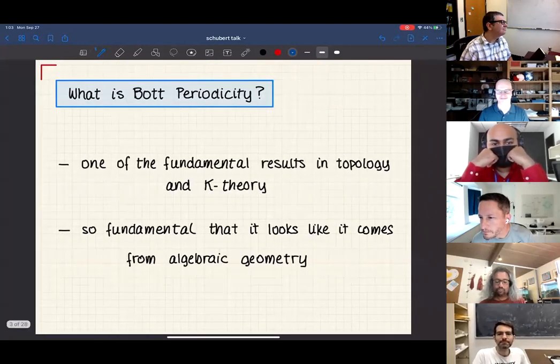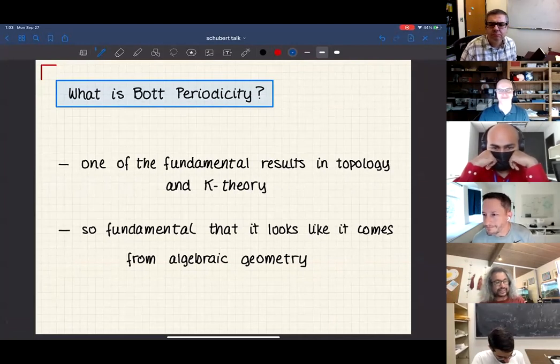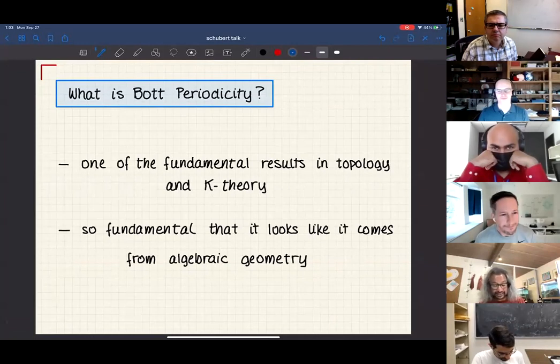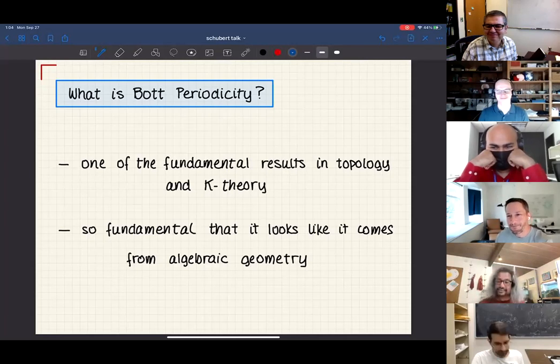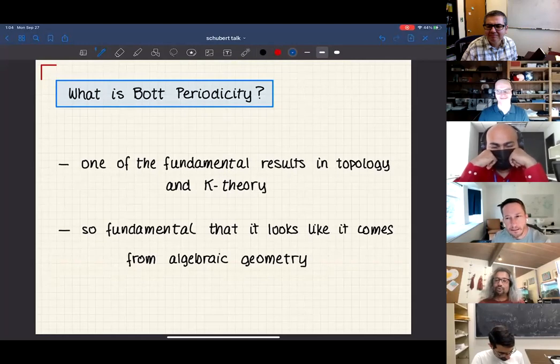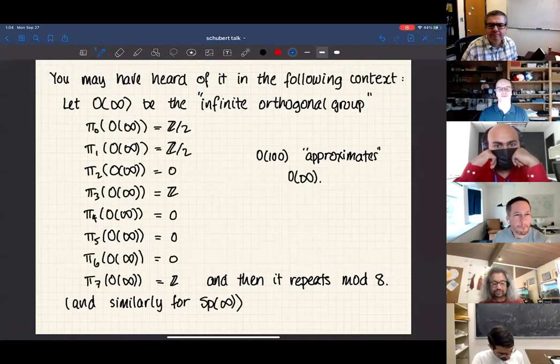So let me go right into it. What is Bott periodicity? I know we're not topologists here, most of us, and so I'll say just enough to get it across. It's one of the fundamental results in topology and K theory, one of the foundational results of K theory. It's so fundamental that it looks like it comes from algebraic geometry.